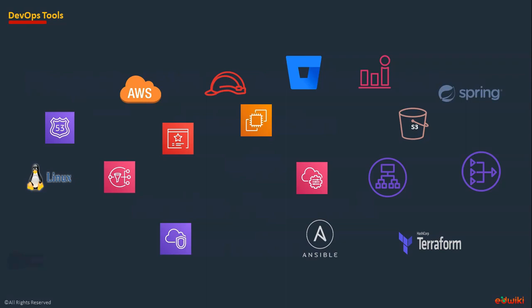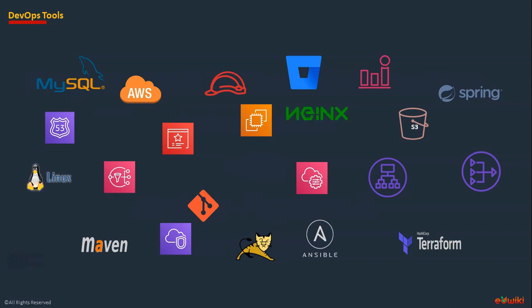I'm using the Spring Boot application to run the application in Tomcat application servers, MySQL as a backend database to store data, and Maven to do the build process of the Java application. Git to integrate with Bitbucket repositories, Nginx as a front-end web server to proxy requests to the backend, and finally Jenkins to create a pipeline for automated Terraform infrastructure deployments.